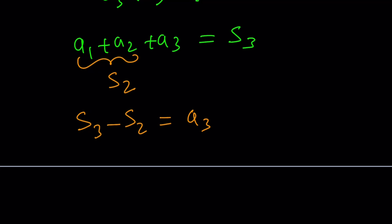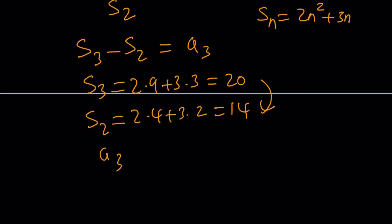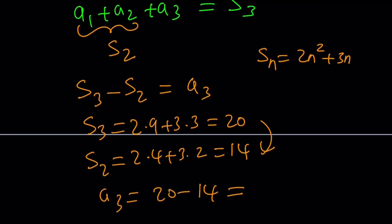Let's compute. S sub 3: plug in n=3 into 2n squared plus 3n — that's 2 times 9 plus 3 times 3, which is 18 plus 9, equals 27. S sub 2: 2 times 4 plus 3 times 2, which is 8 plus 6, equals 14. Therefore, a sub 3 equals 27 minus 14, which is 13.